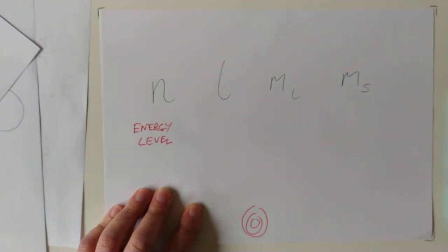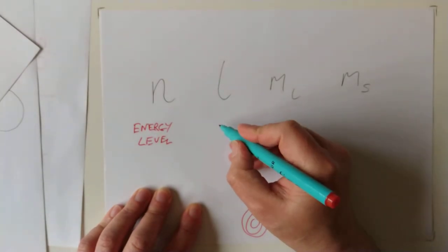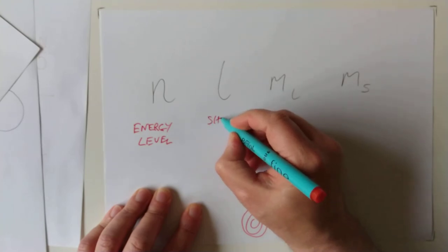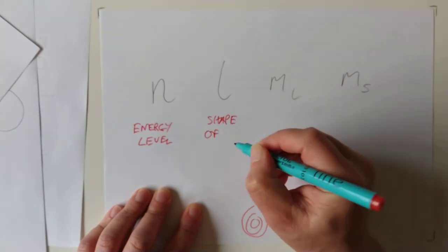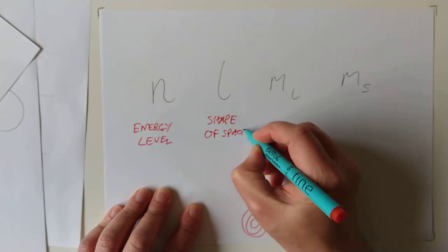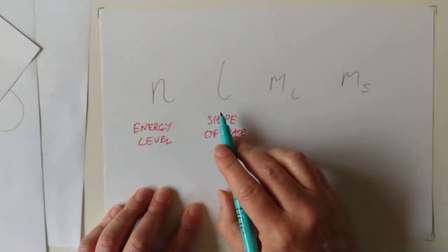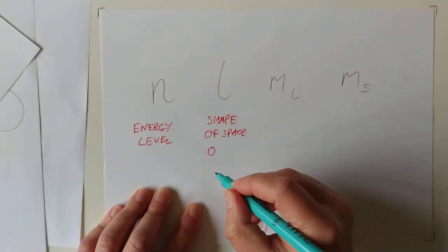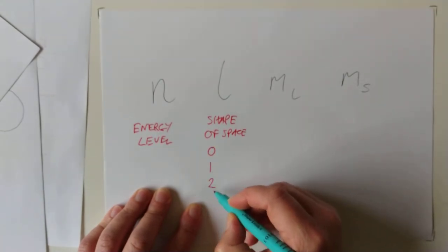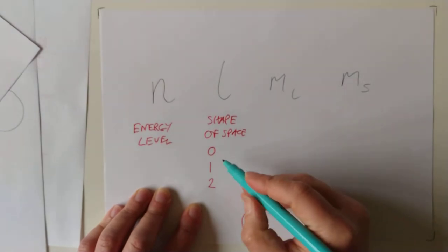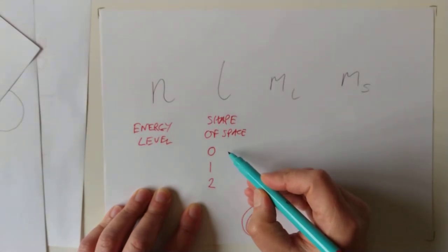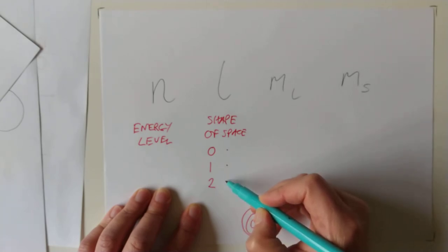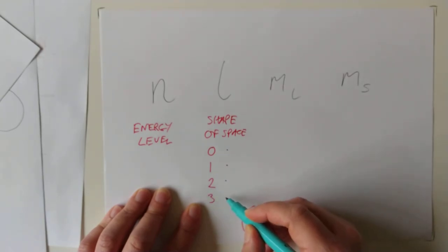L had a different function. L tells you what shape of space you will find electrons in. Now, L is a number. That's not a shape. But for the values of L, we have different shapes of space. We also give them, slightly annoyingly, letters as well. So that's an S orbital, P orbital, a D orbital, and you're required to know that F orbitals do exist.